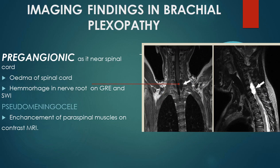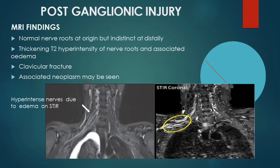Radiologically, we must distinguish between preganglionic and postganglionic injury. The preganglionic injury is near the spinal cord, so there will be edema of the spinal cord with hemorrhage in the nerve root, showing blooming on GRE and susceptibility-weighted imaging. Characteristically, there will be pseudomeningocele formation, which appears as T2/T2-star hyperintensity near the nerve root — this is the hallmark of preganglionic brachial plexopathy. The image shows the pseudomeningocele formation which is T2 bright. As an indirect sign, enhancement of the paraspinal muscle can also be seen.